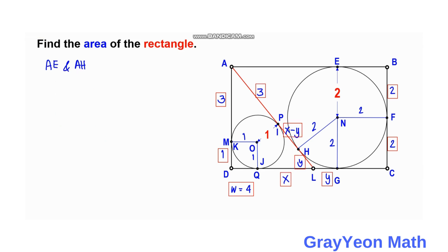Next, we focus on exterior tangent segments AE and AH. Adding along the path from A, we get AH equal to three plus X minus Y. Since AE and AH are both exterior tangent segments from the same point A, we have AE equal to AH, so AE equals three plus X minus Y.